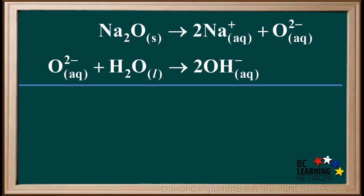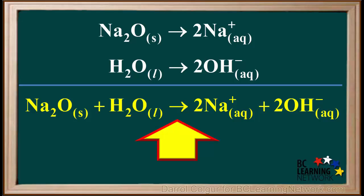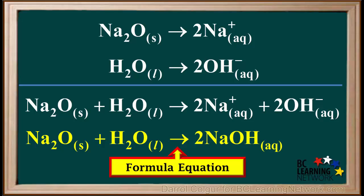Now we'll add these two equations together. We see that O2- is on both sides, so we can cancel it out. We add what's left to get the overall equation. Na2O reacts with water to form 2Na+ plus 2OH-. We can shorten this to a formula equation by writing 2Na+ plus 2OH- simply as 2NaOH on the right.